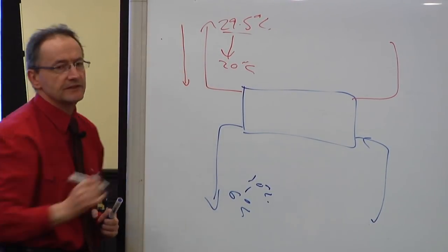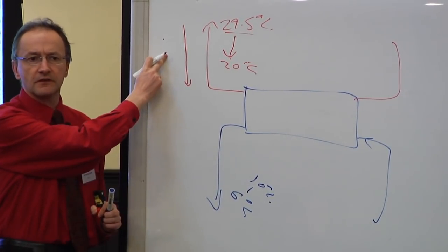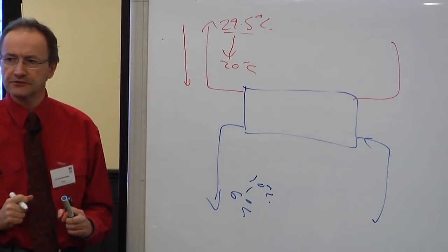For every 1 degree C you reduce this temperature, you get about 2% improvement in chiller efficiency.